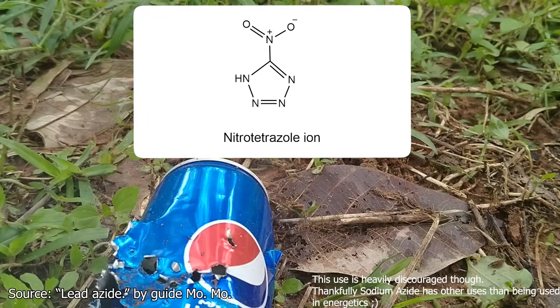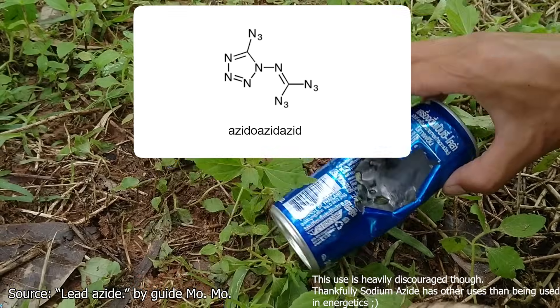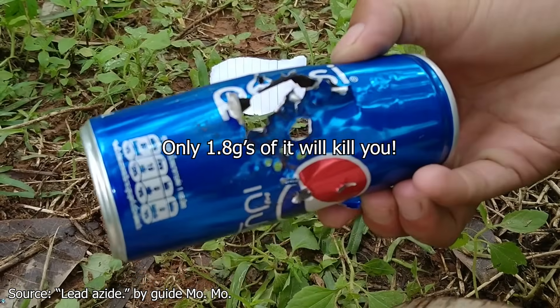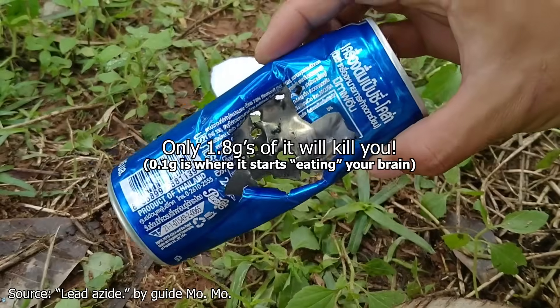It's a precursor to energetics like nitro tetrazole, lead azide, and azidoazide azide. And all it takes is around 1.8 grams of it to make you die a painful death. And today, we'll be making it out of spite.